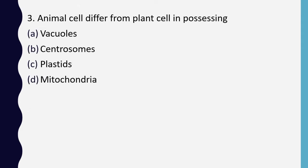Question 3. Animal cell differs from plant cell in possessing: vacuoles, centrosomes, plastids, or mitochondria. Correct answer is option B: centrosomes.